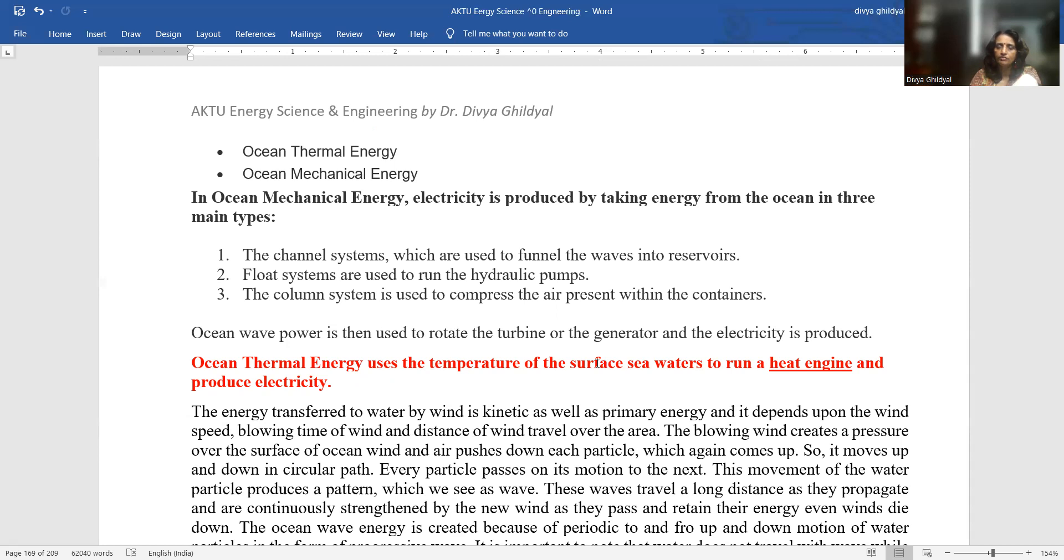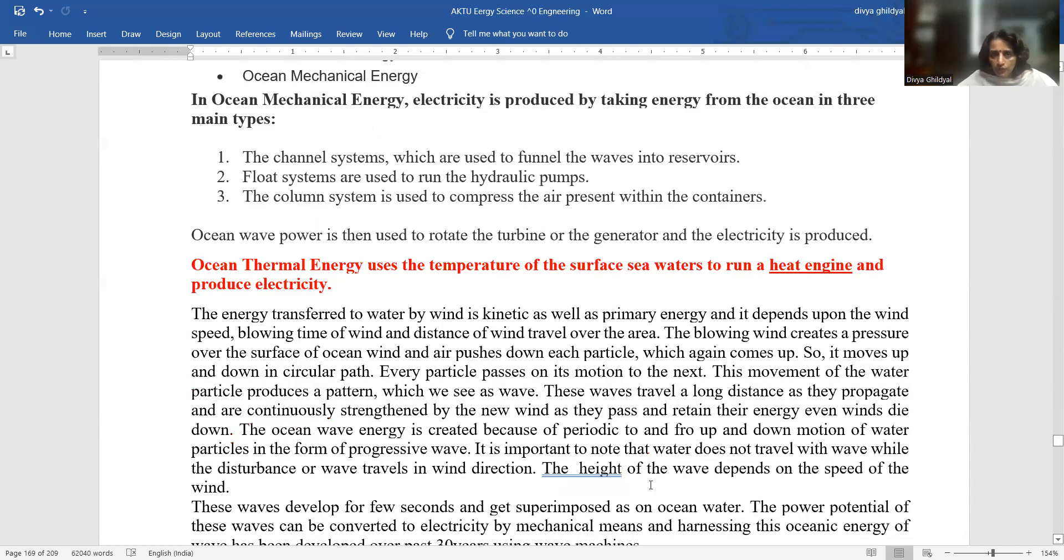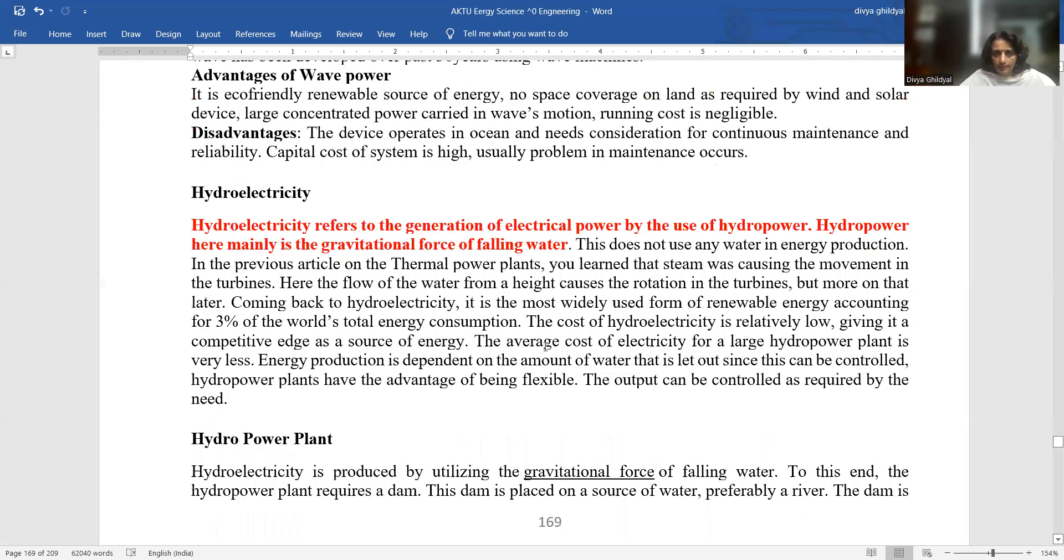Ocean mechanical energy: Electricity is produced by taking energy from the ocean in three main types. The channel system, which are used to funnel the waves into the reservoirs. Float systems, which are used to run the hydraulic pumps. The column system is used to compress the air present within the containers. Ocean thermal energy uses the temperature of the sea water to run a heat engine and produce electricity.